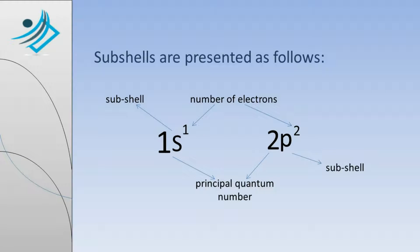Subshells are presented as follows. The number to the left represents the principal quantum number. The alphabet represents the subshell type. And the number on the top of the alphabet represents the number of electrons in the subshell.